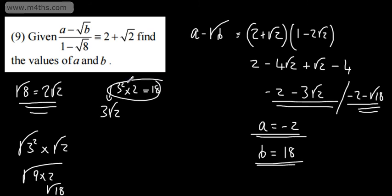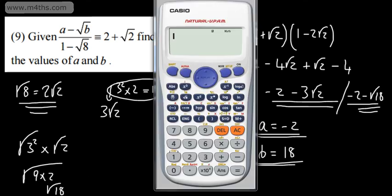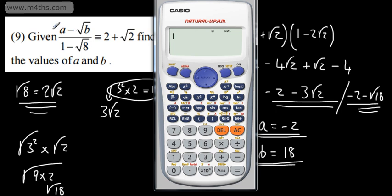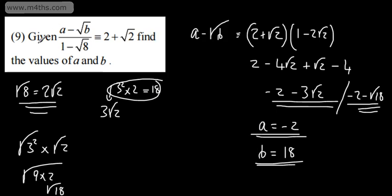So if the value of a is negative 2, the value of b is going to be 18. If you want to check that, go ahead and use a calculator. So we've got negative 2 minus the root of 18 over 1 minus the root of 8, and that should give us 2 plus root 2. So there we go, perfectly fine. You probably more than likely wouldn't have the facility of a calculator, but if you're doing this at home, it's nice to check.